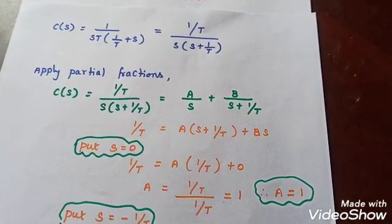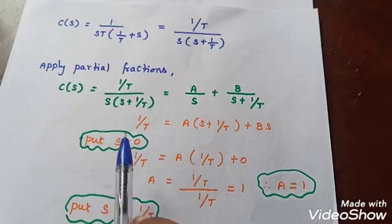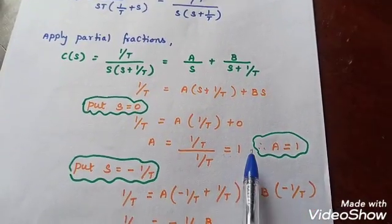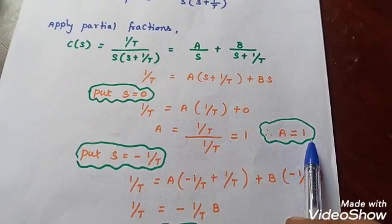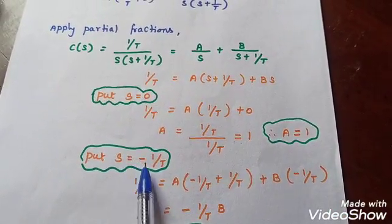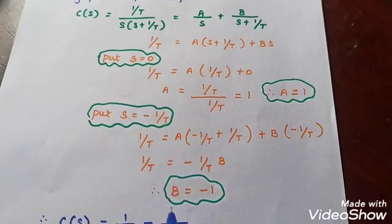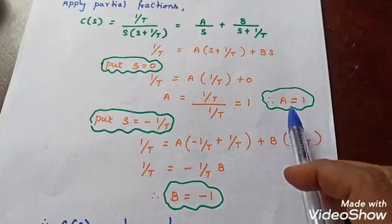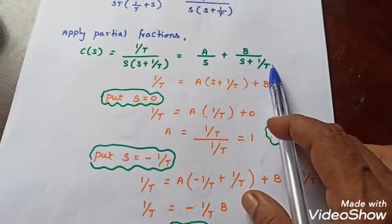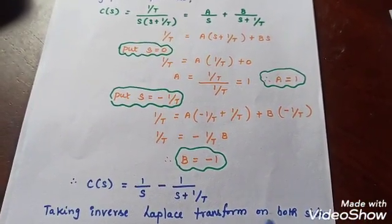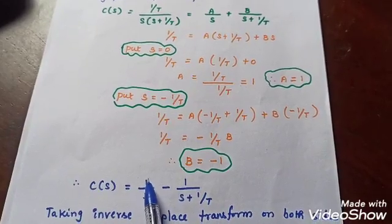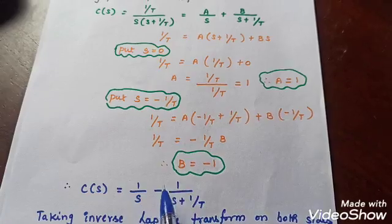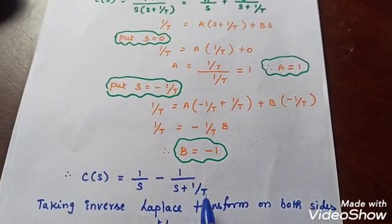We need to find constants A and B. Putting S = 0, we get A = 1. Putting S = −1/T, we get B = −1. Substituting these values back: C(S) = 1/S minus 1/(S + 1/T).